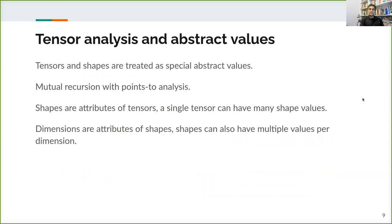Now, tensors and shapes in our analysis are treated as special abstract values. And the whole analysis is in mutual recursion with an underlying points-to and call graph analysis. So, we will see some results that get produced by tensor operations, and they just flow as regular values in a whole program data flow analysis. The shapes themselves are abstract values that propagate alongside tensors. There are special attributes of tensors. And a single tensor can have many shape values in a may capacity. So, as you can imagine, we get an error or a warning report only when there is no possibility that any of the shapes available for a tensor is compatible with a certain operation. Dimensions are the attributes of shapes. They are the columns of shapes. And shapes can also have multiple values per dimension.